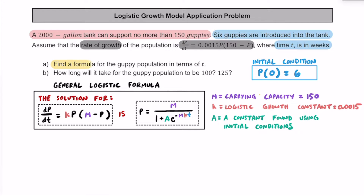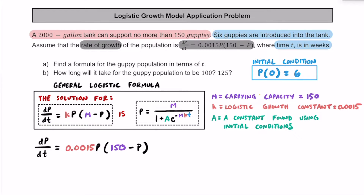When the directions say to find a formula for the guppy population in terms of t, we have to write an equation in the standard logistic form. To do that, we start with the equation we were given which models the rate of growth, and relate it to the population formula. We can see that k equals 0.0015 and the carrying capacity m is 150 guppies. Now let's use that information to write a formula for the guppy population in terms of t.